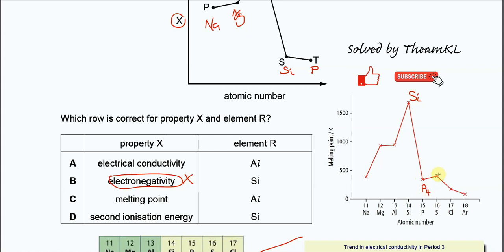Sulfur is also simple molecular structure but has more atoms, S8, so it has higher melting point than phosphorus. Then followed by chlorine, Cl2, because it's a diatomic molecule, so it has lower melting point compared to the previous two, followed by argon. So if property X is melting point, it should look like this. This is the melting point across Period 3.